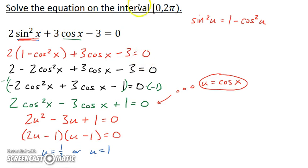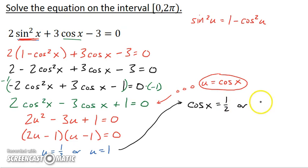Now, I don't want to know what values of u work here. I want to know what values of x work. So I'm going to have to take this and substitute back. Instead of u being a half, I want cosine of x is a half. Or, not u, but cosine of x is 1.